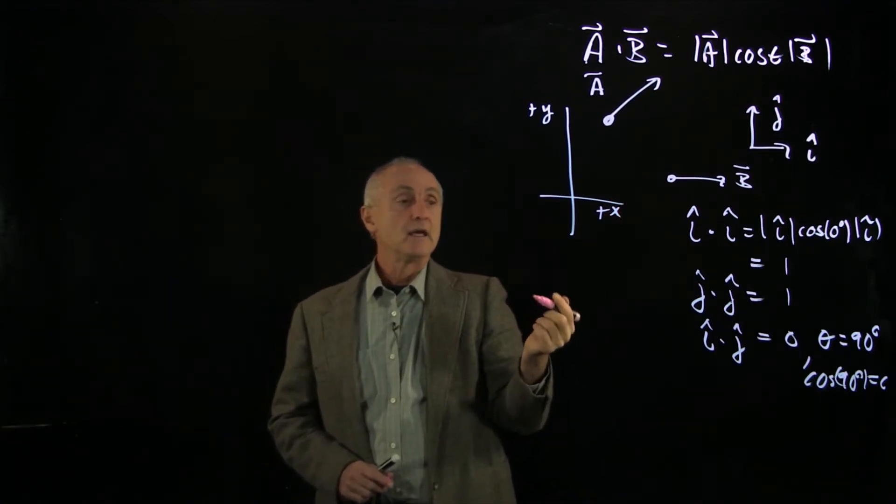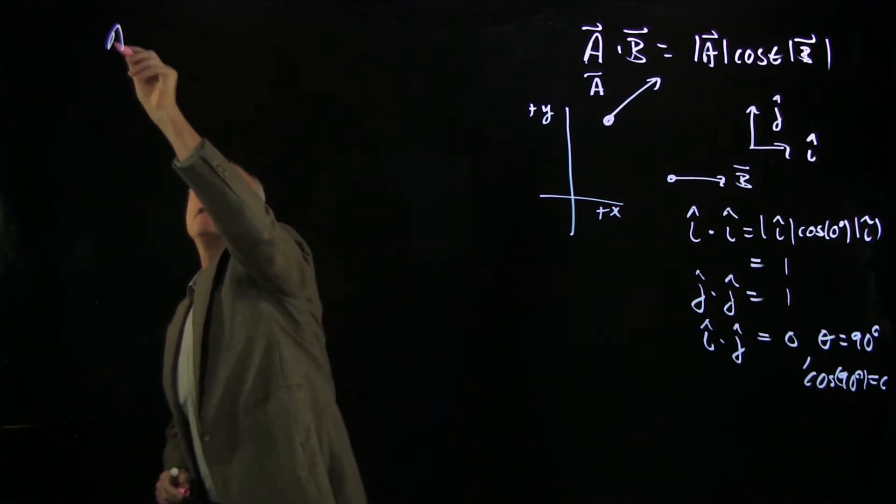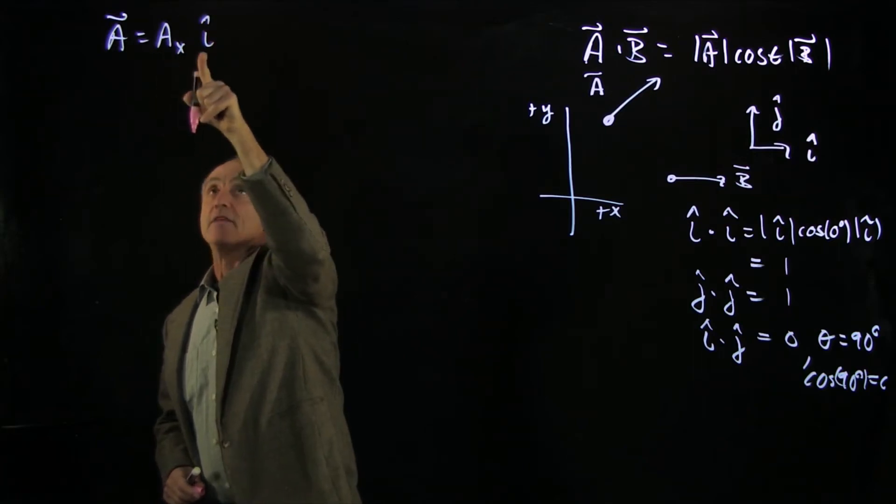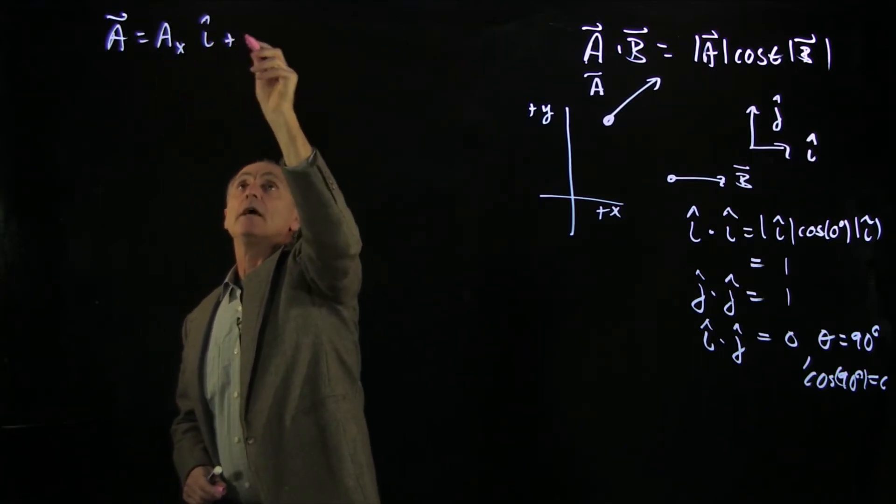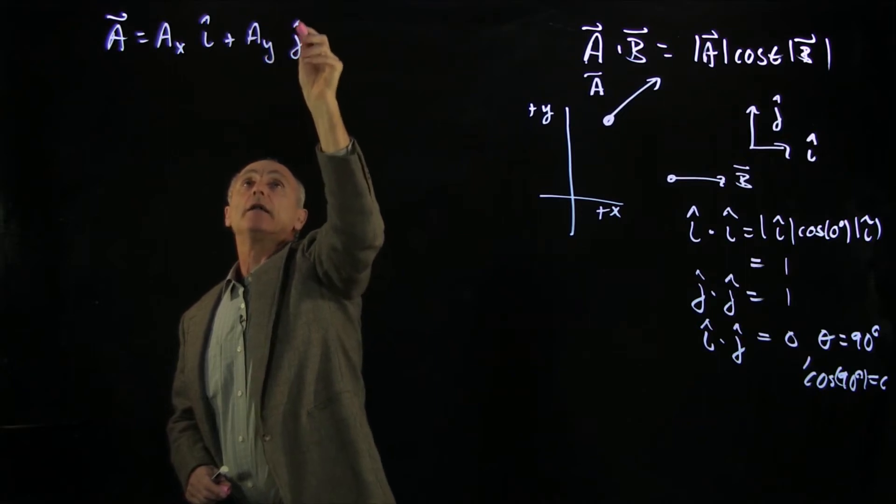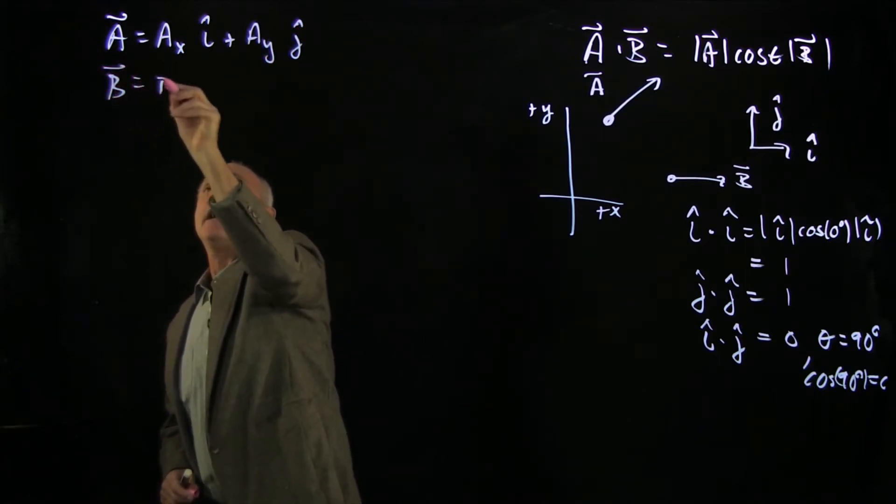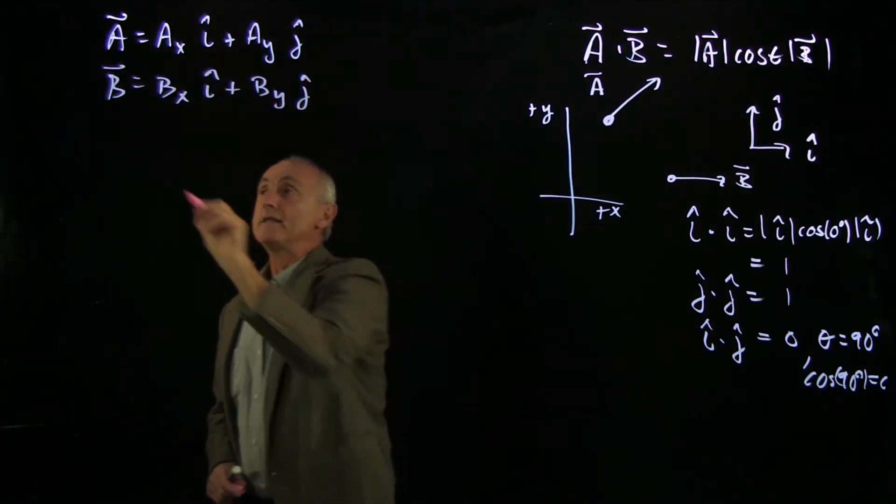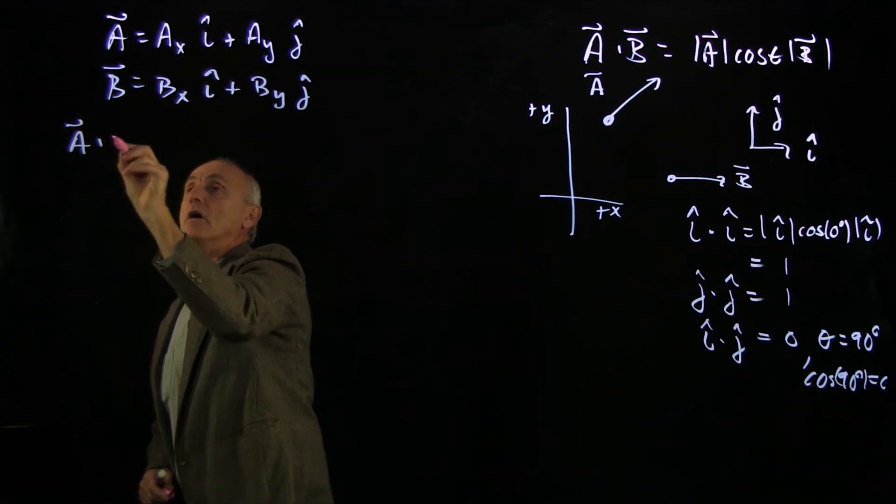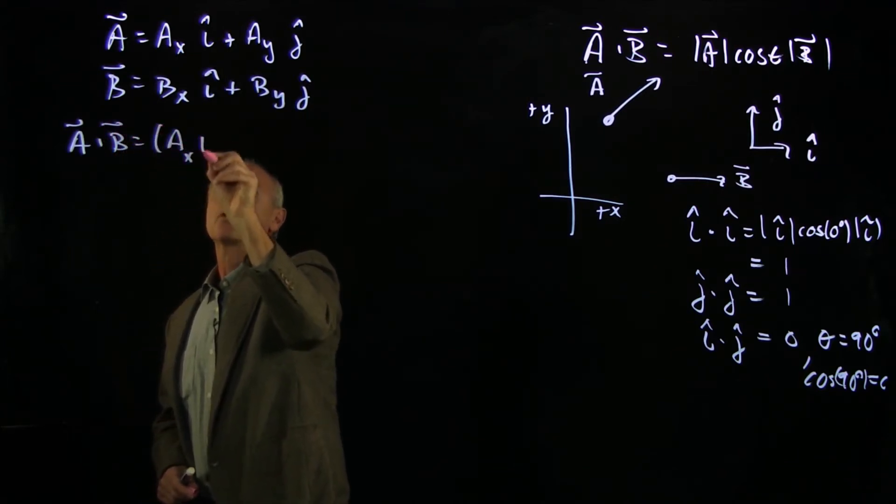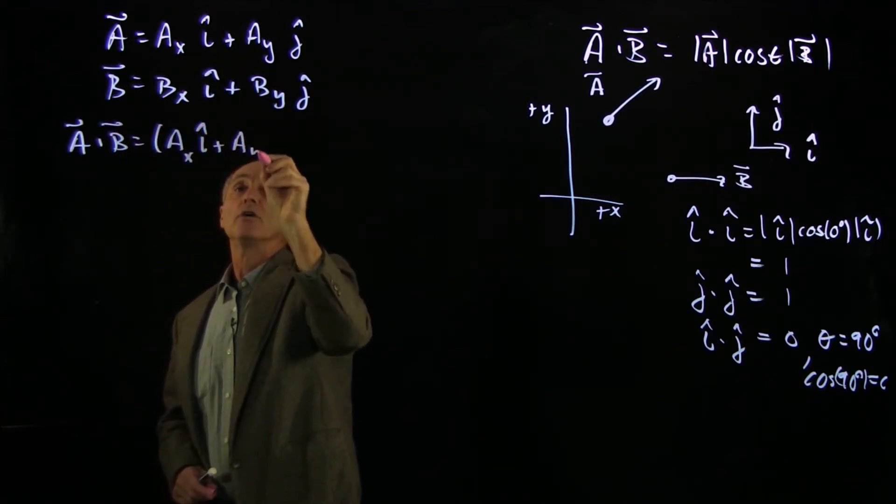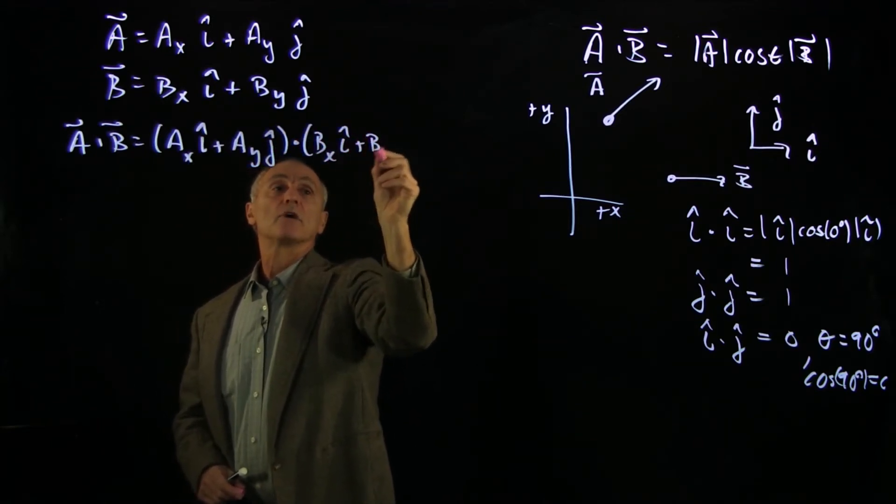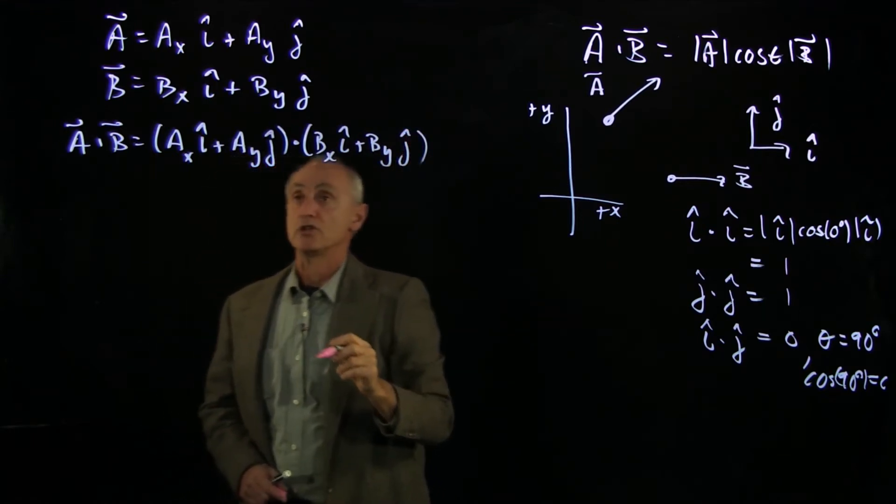So the way we do that is we'll begin by writing down the vectors in Cartesian coordinates, where ax is a scalar, and the vector part is in the unit vector. And we have ay j hat. And likewise, we can write B as bx i hat plus by j hat. And now, when we take the dot product of these two vectors, we're going to write out all the terms here so that you see them. So here is our scalar or dot product. We use those words interchangeably.